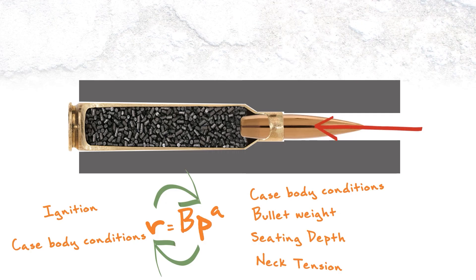You've got a bunch of things conspiring to keep that bullet in the case, and then you've got other things — the ignition, the powder burn, the pressure build — trying to push it out. The pressure always wins, but if you're not consistent on any of these other things, it can have an impact on your pressure profile, and that will impact your shot-to-shot consistency.